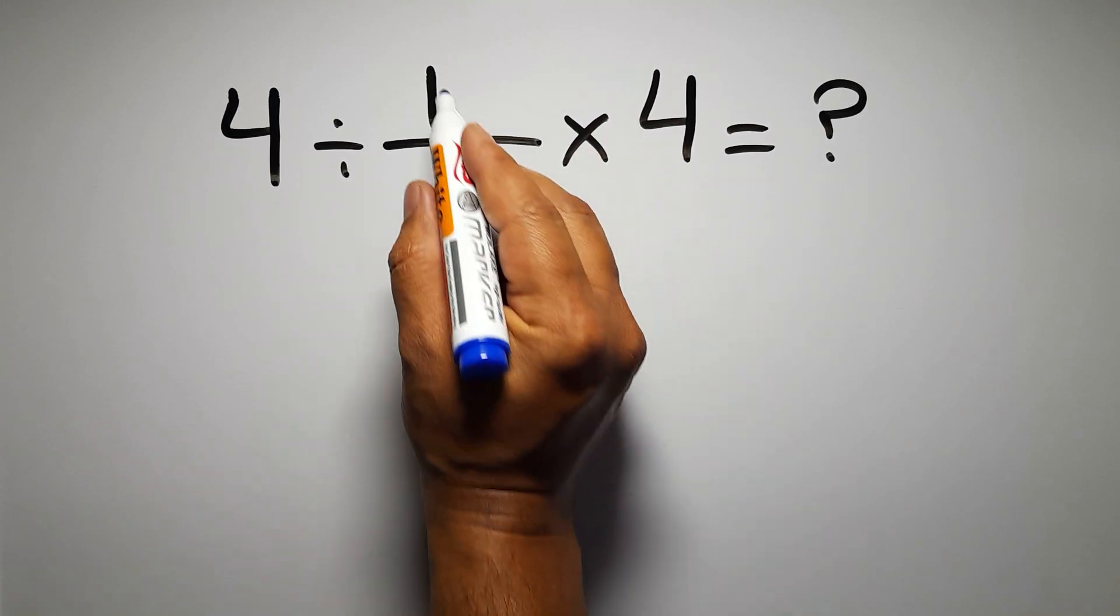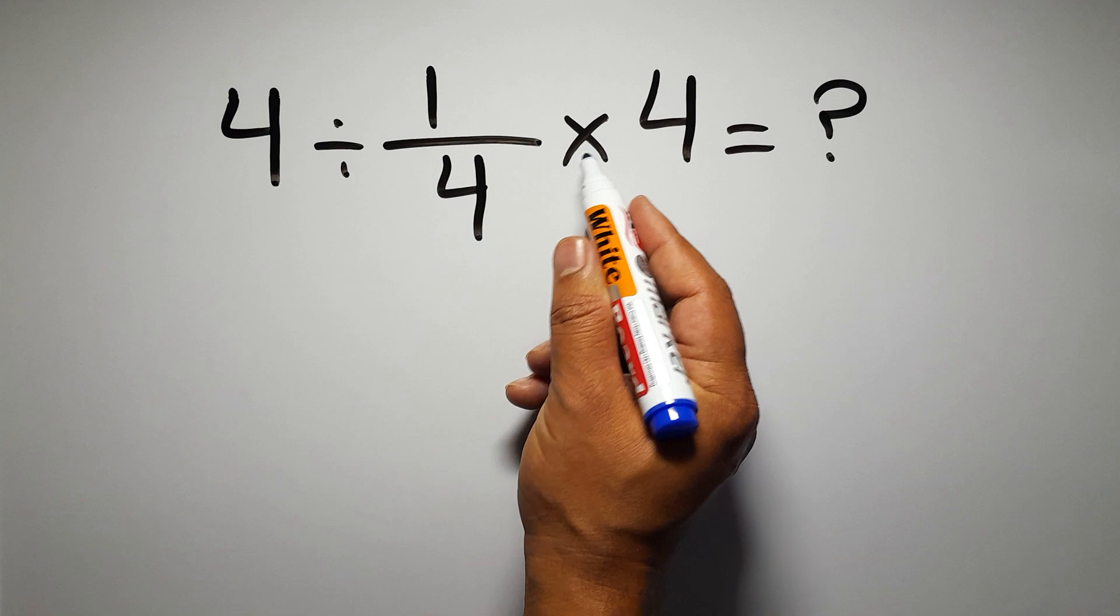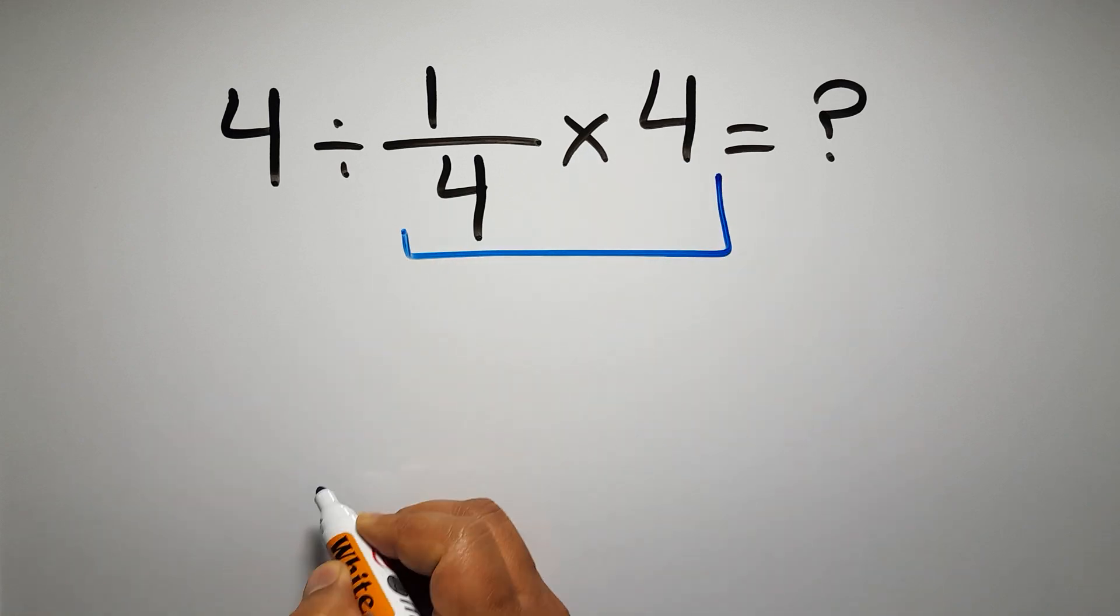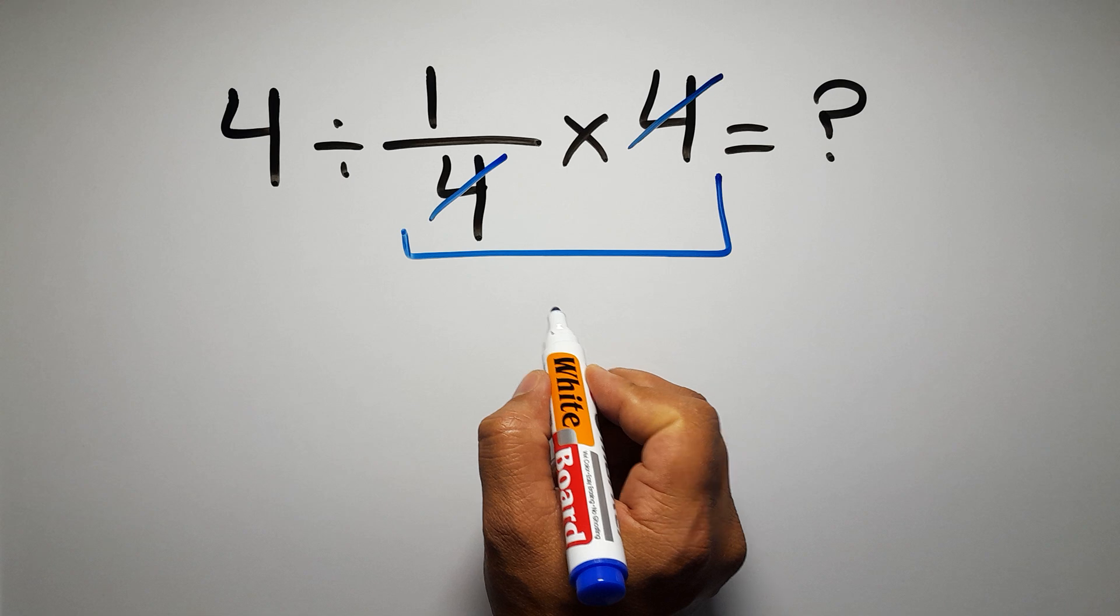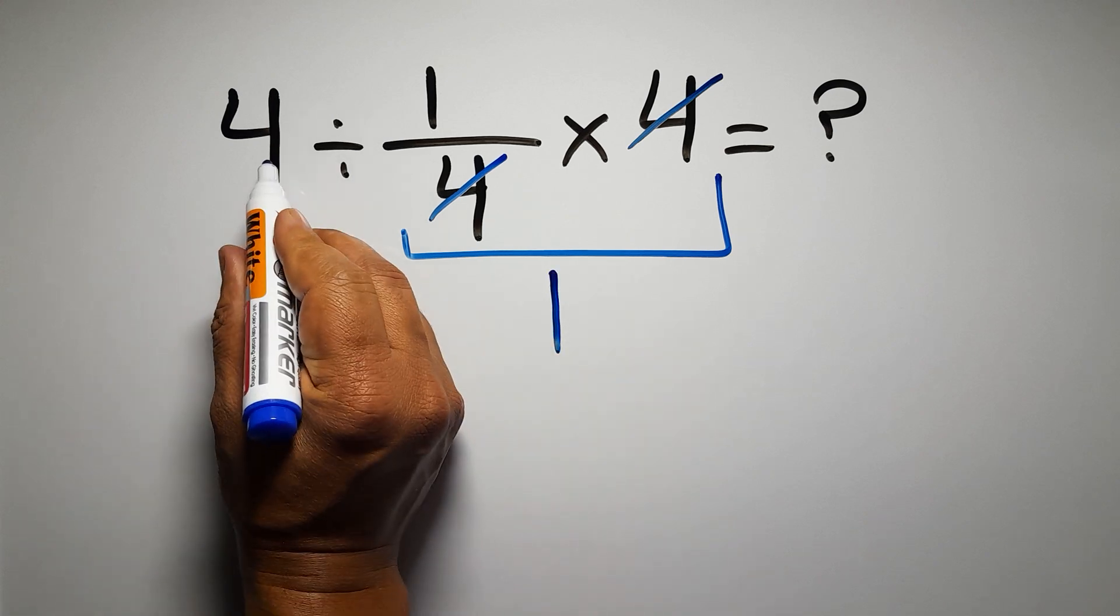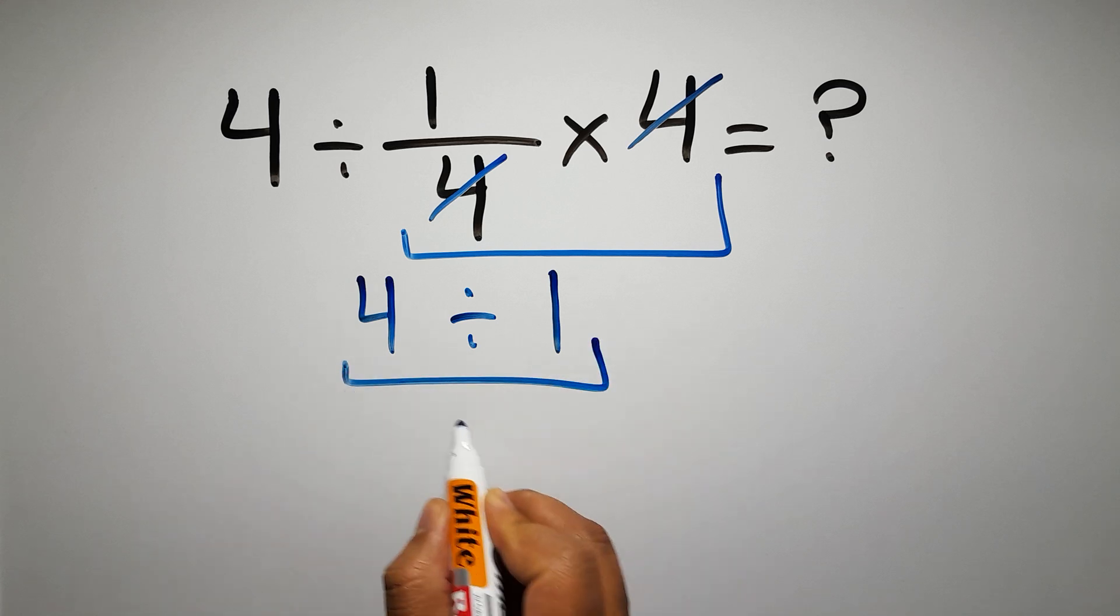First, we do this multiplication, 1 over 5 times, excuse me, 1 over 4 times 4. We can easily cancel this 4 and this 4, so we have just 1. And 4 divided by 1 gives us 4.